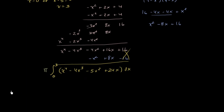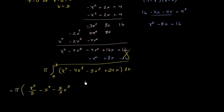Now we just have to take the antiderivative. This is going to be equal to pi times: the antiderivative of x to the fourth is x to the fifth over 5. The antiderivative of negative 4x to the third is negative x to the fourth. And then the antiderivative of negative 5x squared is negative 5 thirds x to the third. And then plus 24x squared over 2, which is plus 12x squared.